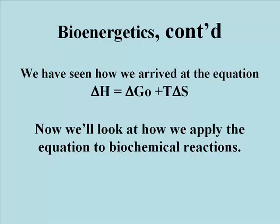We've considered the bioenergetics of closed systems and arrived at the equation delta H equals delta G0 plus T delta S. In this module, we'll apply this equation to see how delta H, or enthalpy change, and delta G0, the standard free energy change, can be determined for chemical reactions. We'll also extend our understanding of thermodynamics from closed systems to open systems.